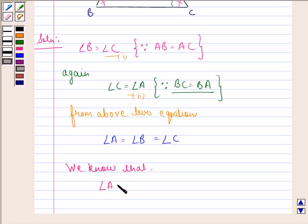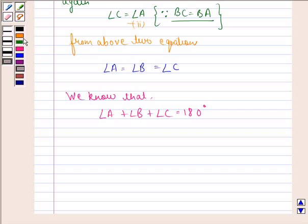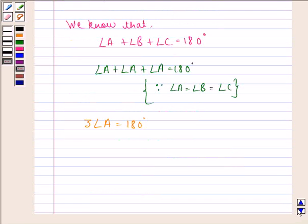angle A plus angle B plus angle C is equal to 180 degrees, because sum of measure of all the angles of a triangle is 180 degrees. We can say angle A plus angle A plus angle A is equal to 180 degrees, because angle A is equal to angle B is equal to angle C. We can say 3 times angle A is equal to 180 degrees, divided by 3, that is equal to 60 degrees.